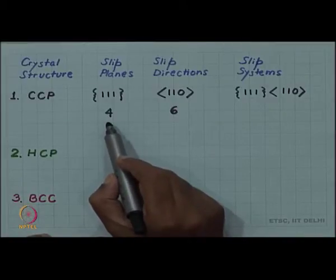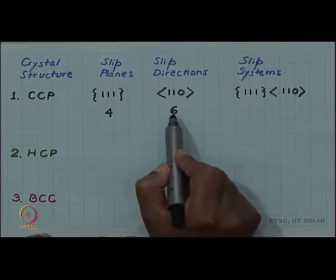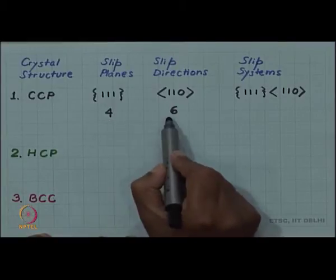In any given plane, only 3 of the slip directions lie. So for every plane we have 3 directions.